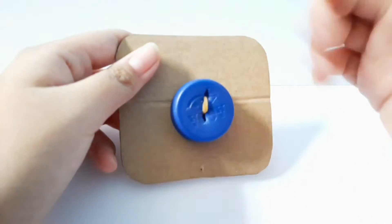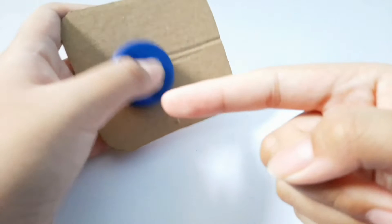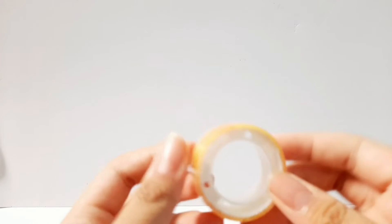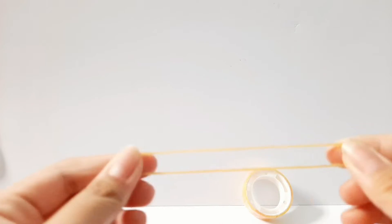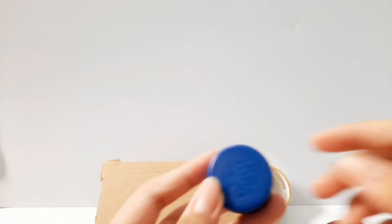But before we start, don't forget to like and subscribe. And without further ado, let's get started. So the things that you need to make this DIY joystick are tape, a rubber band, a piece of cardboard, a pair of scissors, and a bottle cap.